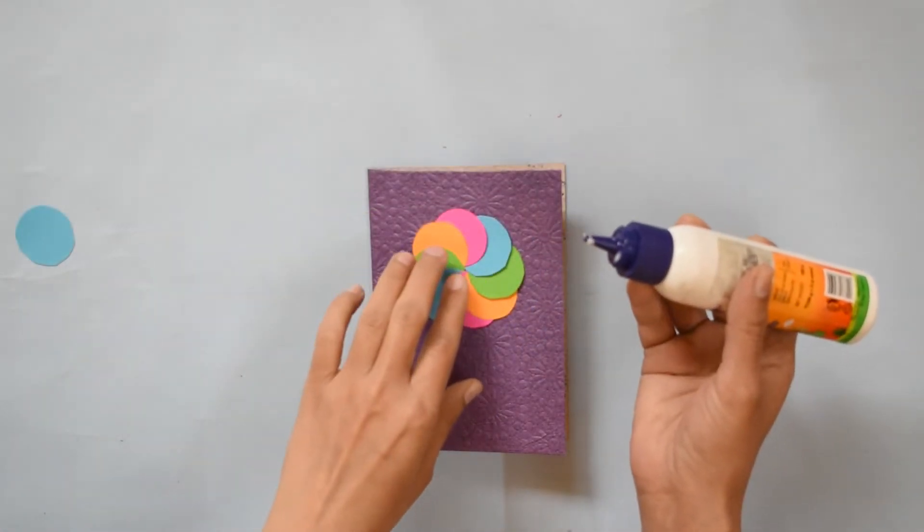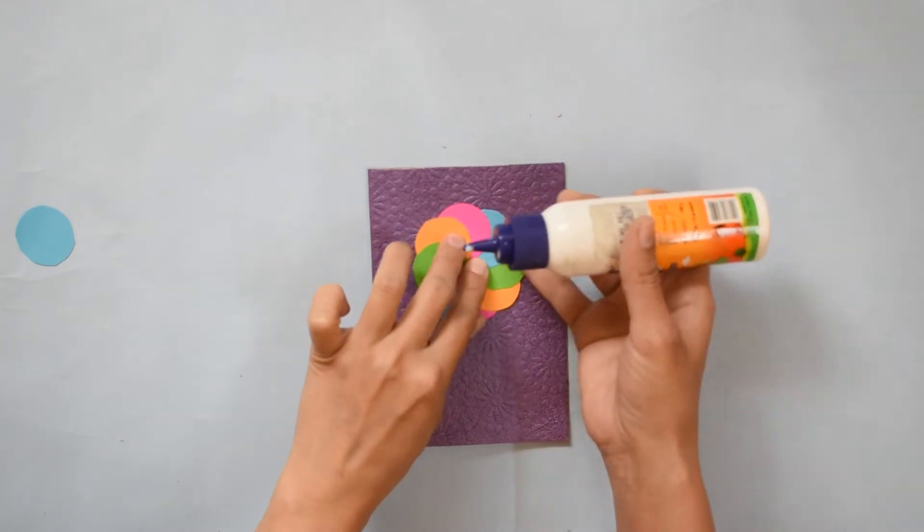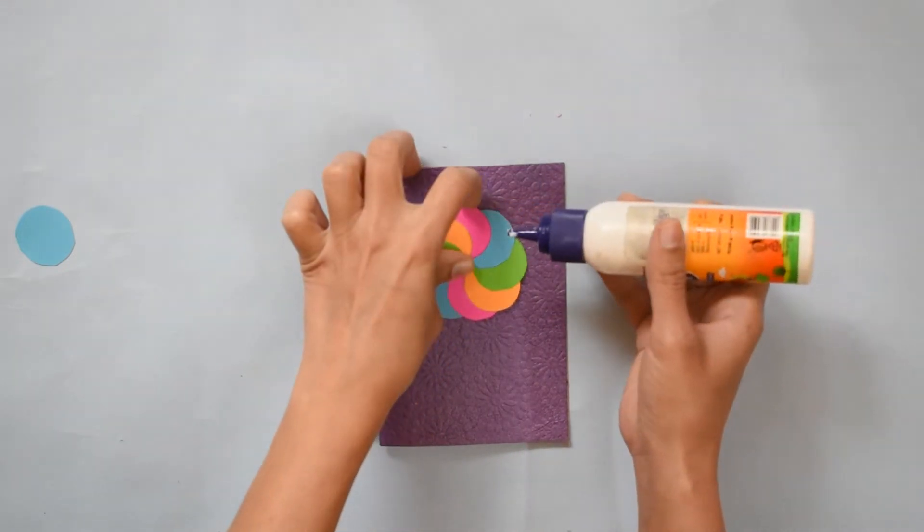Now apply glue and stick it. First stick all the circles.